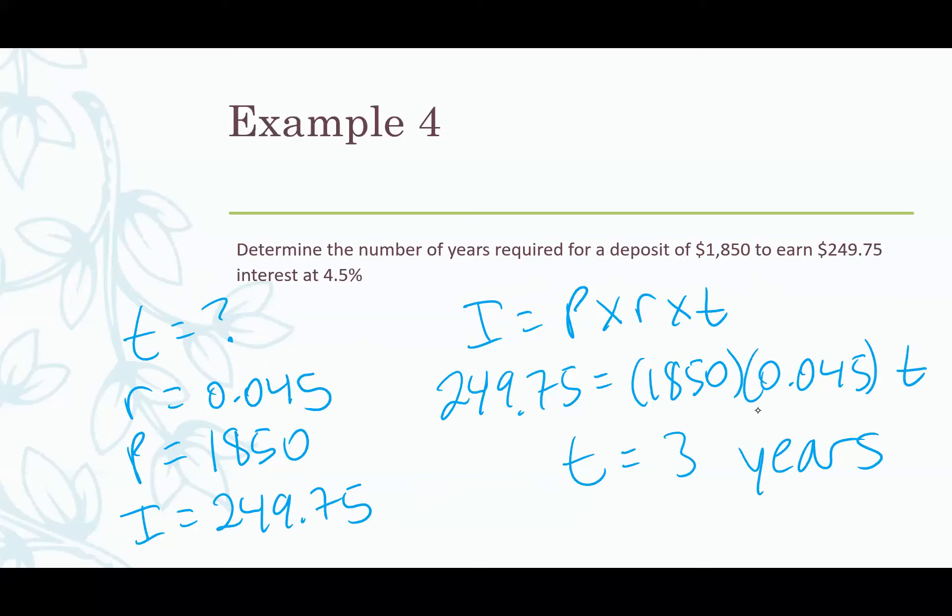We take our formula, we plug in what we know, we isolate for what we don't know and we should get three. So it would take three years for that to happen. That's the end of our 7.2 lesson about simple interest.